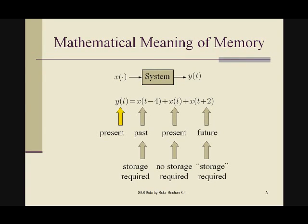Let's consider time t to be the present. If that's the case, then time t-4 is the past. For example, if time t is 7 and t-4 is 3, it's in the past. If the system also depended on x(t), that's the present, it's the same as the time t for y(t). And the time t+2 is the future.